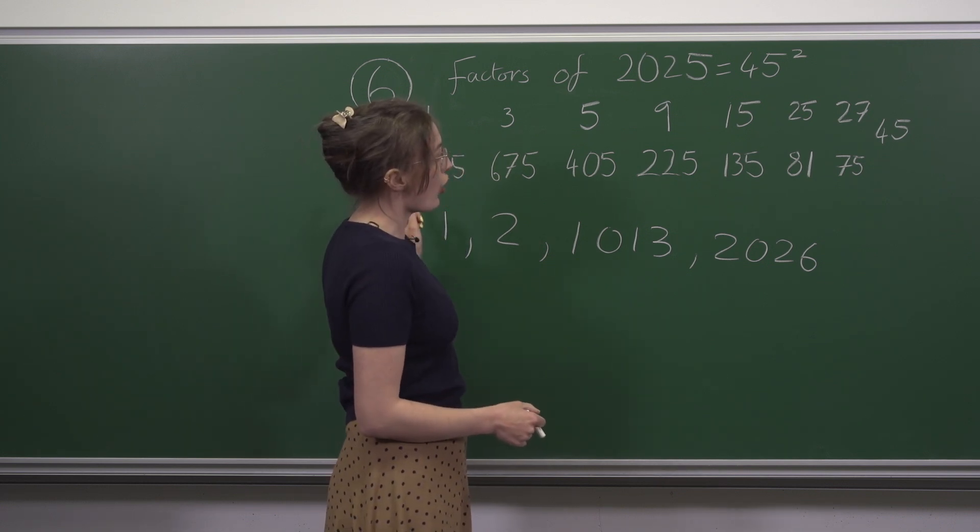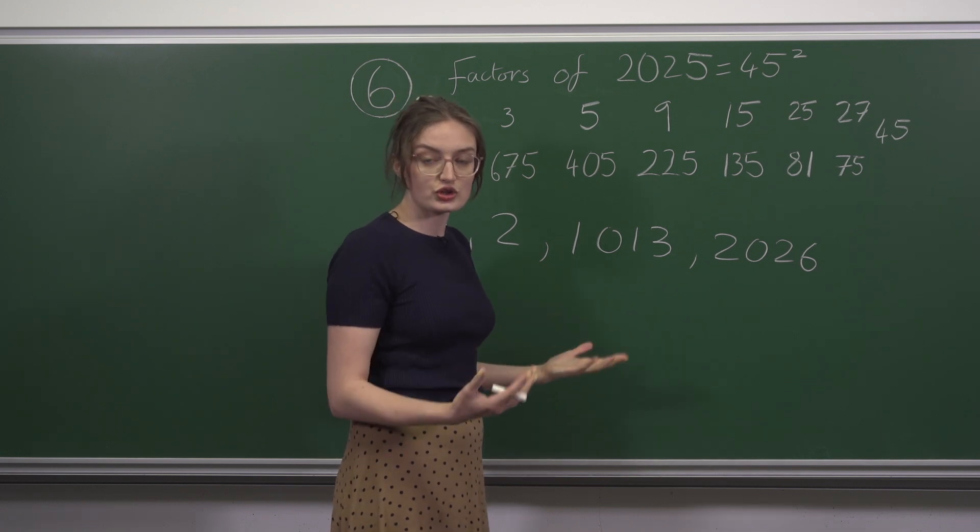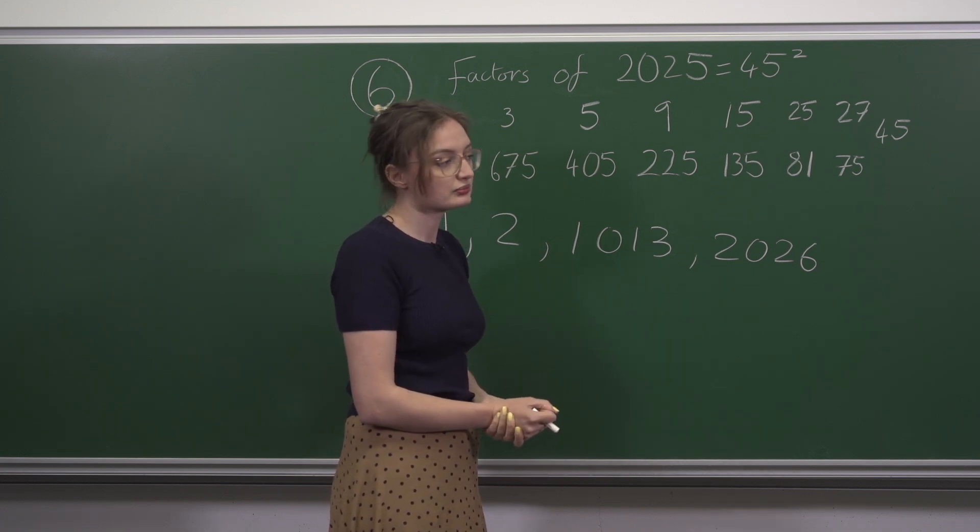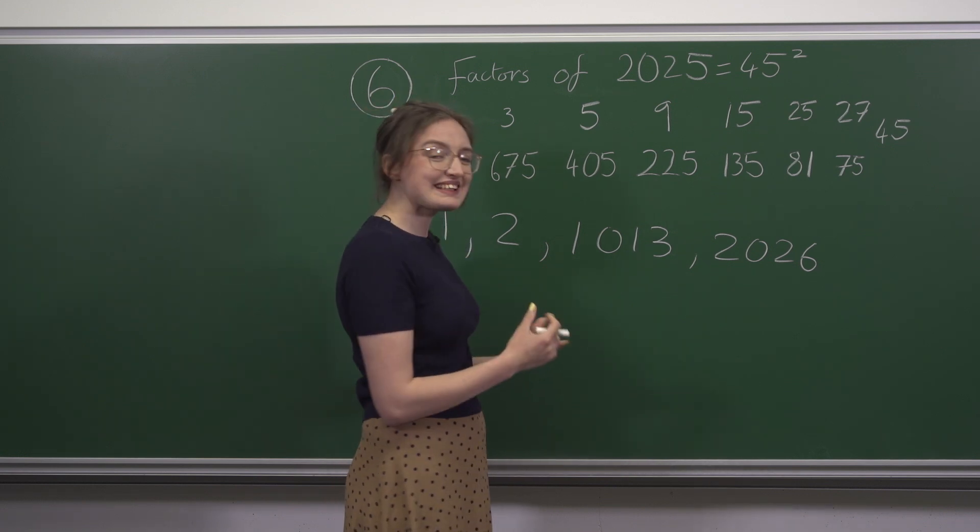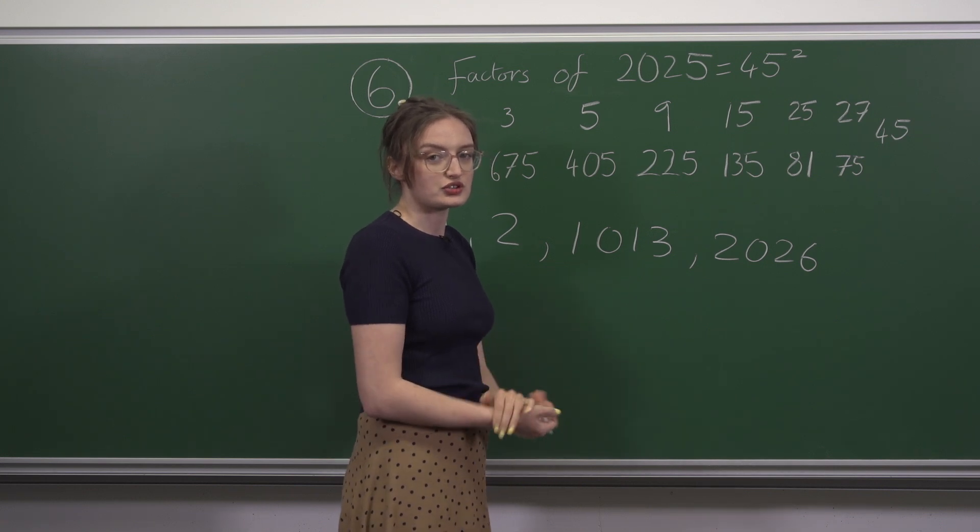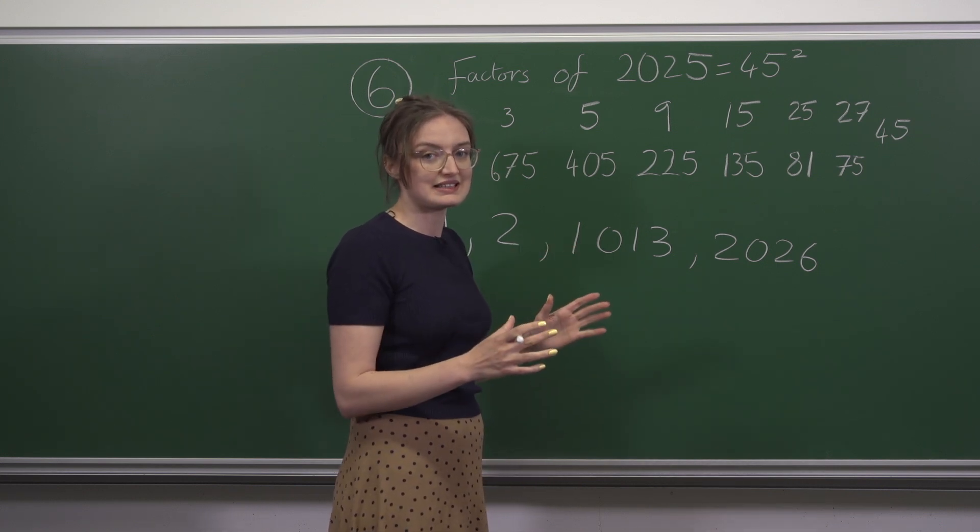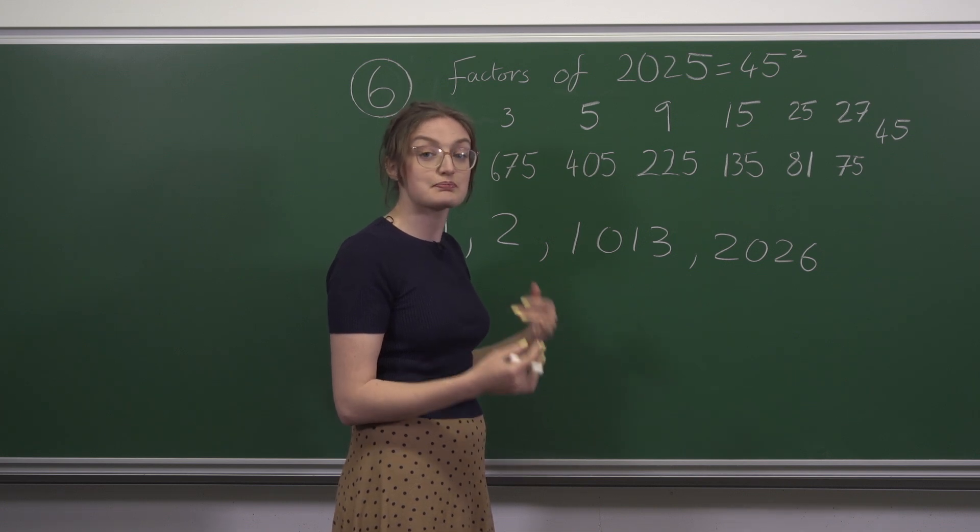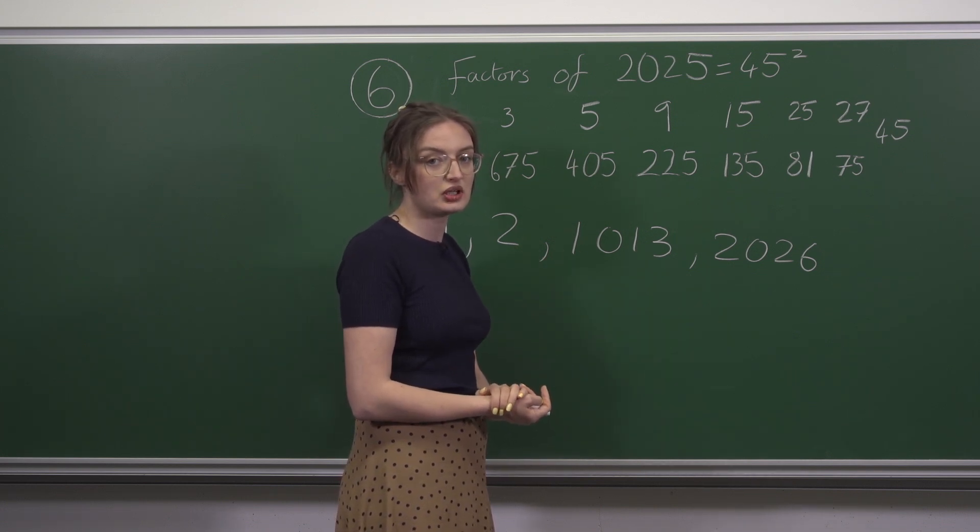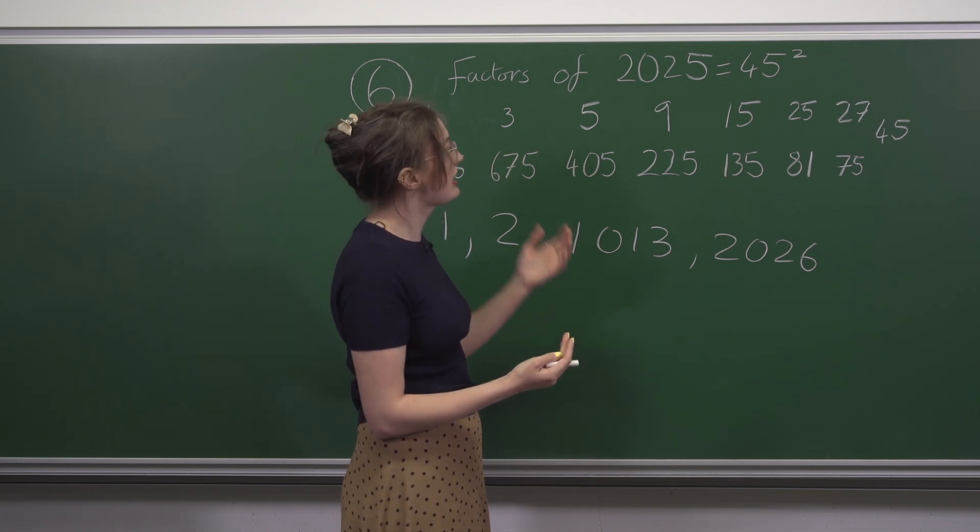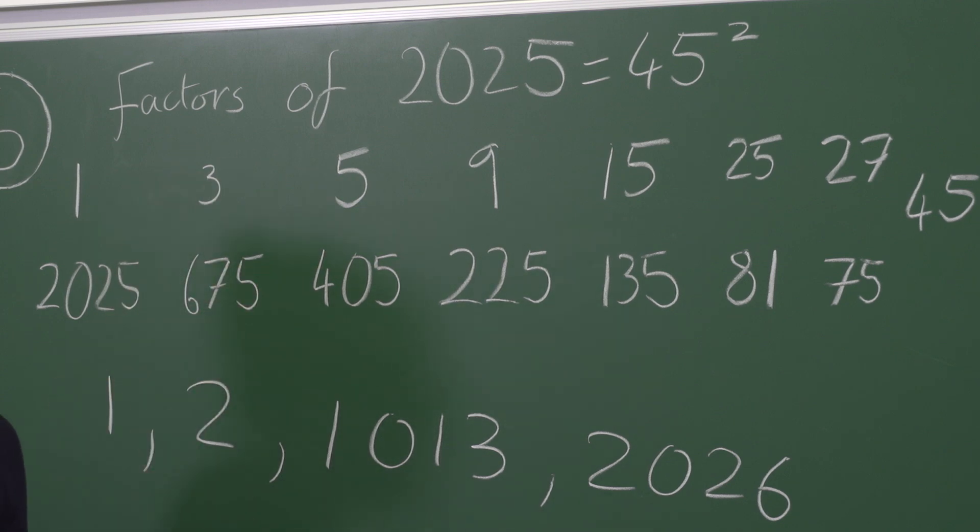Well, all the factors of the original number are also factors of our new number. We can't get any extra odd factors though. So the number of odd factors remains exactly the same. Meaning that multiplying a number by 2 doesn't change whether the sum of its factors is even or odd.